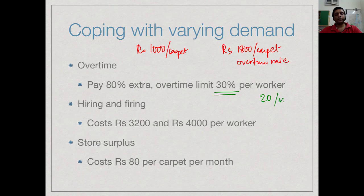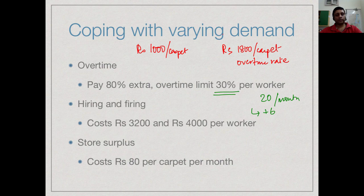A single worker can make at most 26 carpets per month including overtime. The other option is to add or subtract employees — hiring new workers when demand is projected higher, or terminating some when demand drops below 600. This also comes with costs: 3,200 rupees to hire a worker and 4,000 rupees to fire a worker.